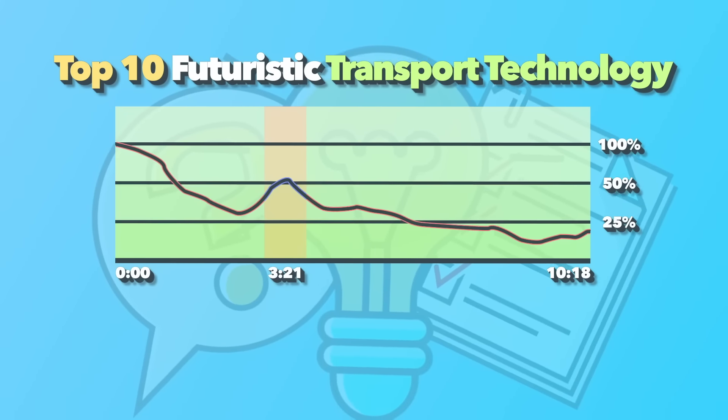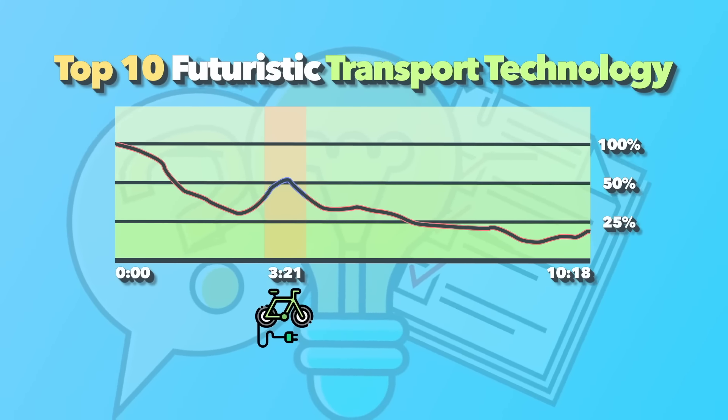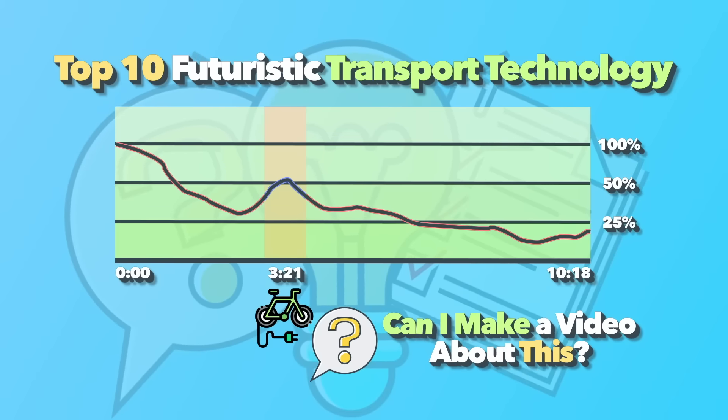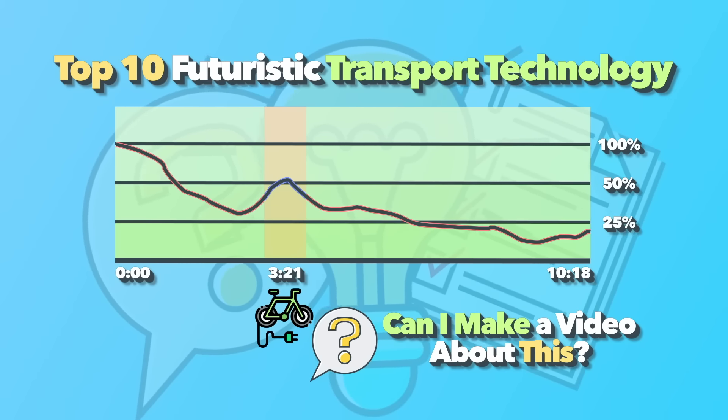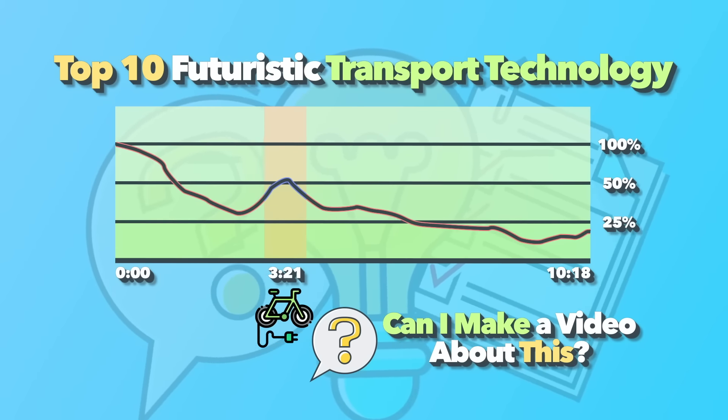Here's how I've practically implemented this on my own top 10 channels. I run channels where I do countdown lists on different subjects, and the way I've used this is to go into a specific object that I talked about in the video where people showed a ton of interest, and ask myself, could I make a top 10 list just on this specific object? For example, if you have a top 10 technology video talking about futuristic transport technology and when you talked about this electric bike people watched way more at that point, ask yourself, could you potentially make a top 10 electric bike video? And there's a video idea right there.